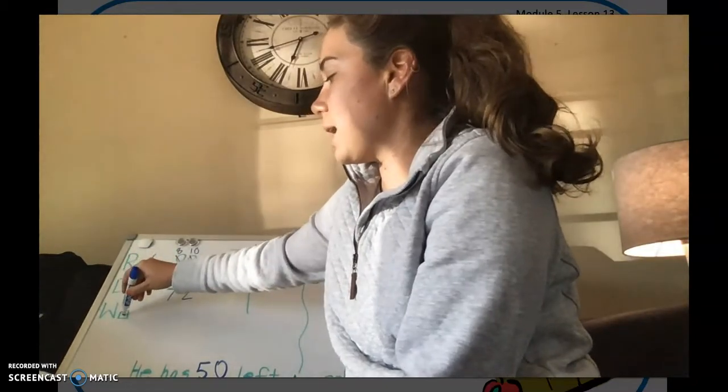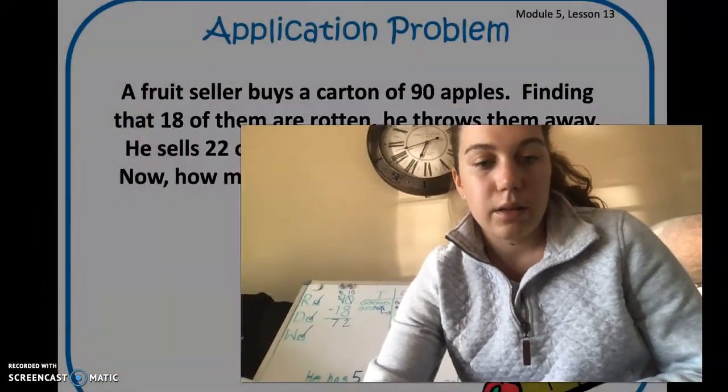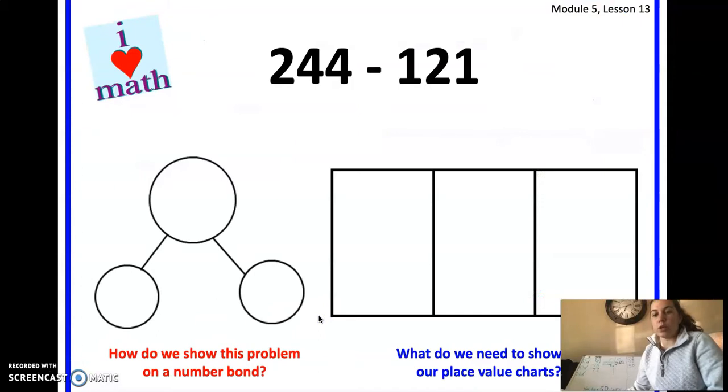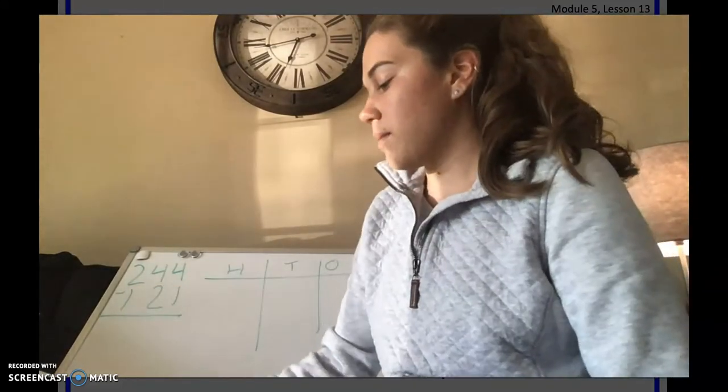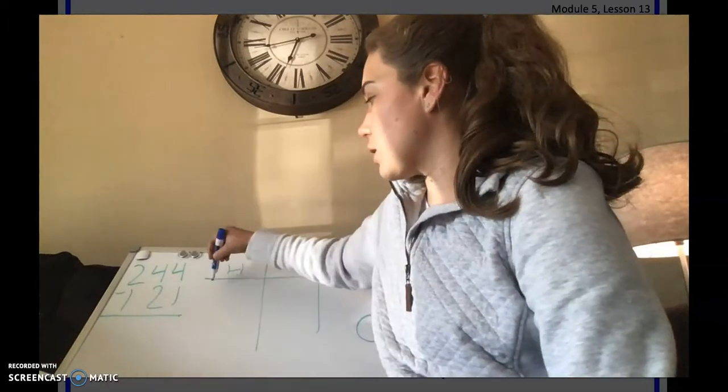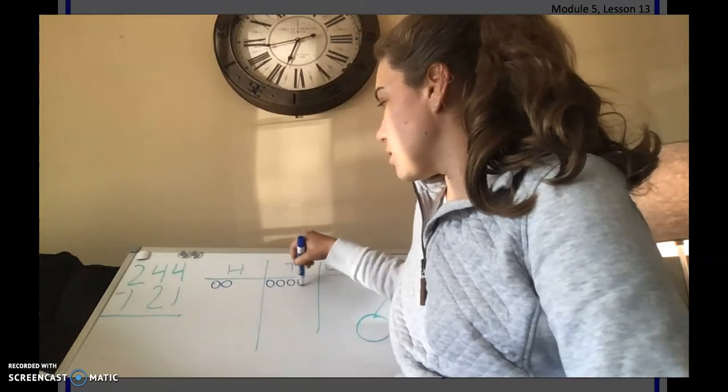So we've read our problem, we've drawn our picture, and we've written our word sentence. Nice work. So now our next problem says 244 minus 121. And they want us to use a place value chart, but they also want us to use a number bond. So I'm going to draw my place value chart. And over here, I'm going to have my number bond. So I have 244 minus 121. So first I'm going to show 244. So 2 hundreds, 4 tens, and 4 ones.